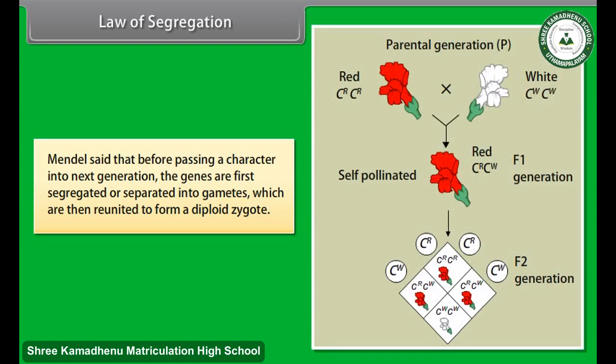Law of Segregation states that for passing a character into the next generation, the genes are first segregated or separated into gametes, which are then reunited to form a diploid zygote.